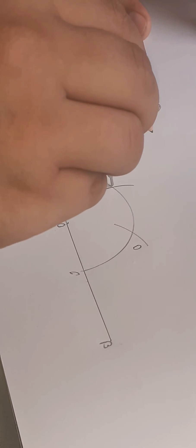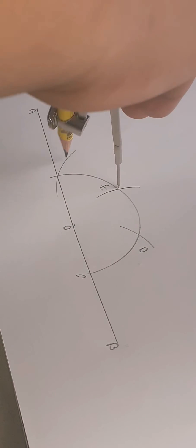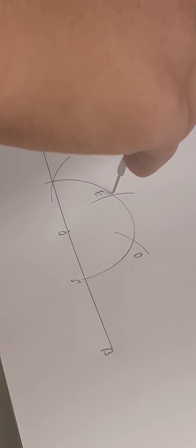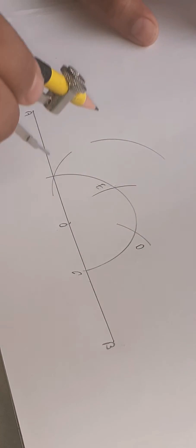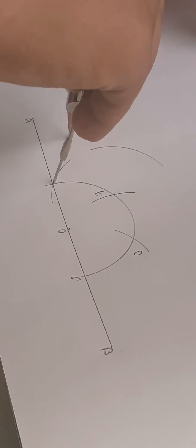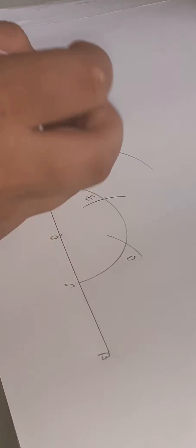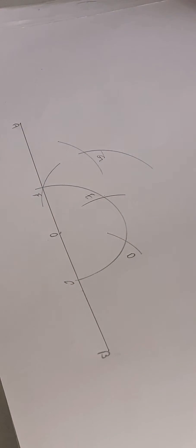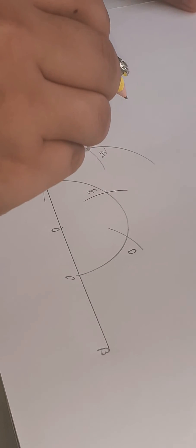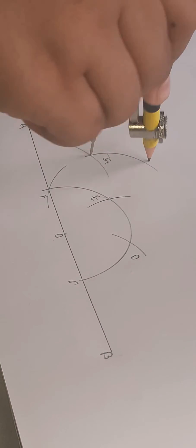Put your compass needle at E and cut an arc. Put the compass needle at E and cut an arc again. With the compass needle at E, cut an arc. Write your point G. Put the compass needle at G and draw an arc.